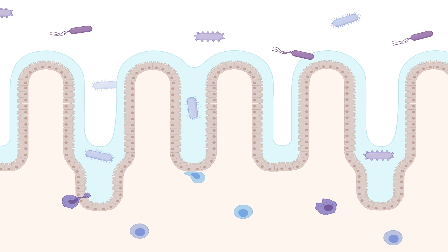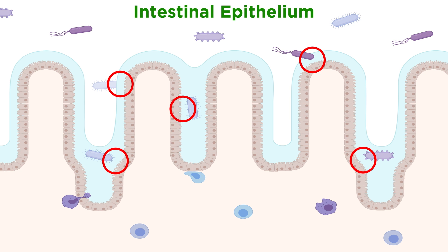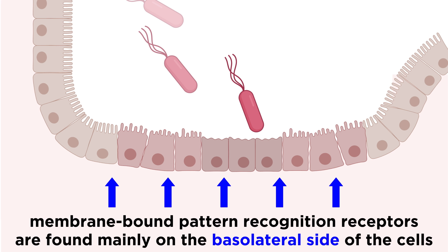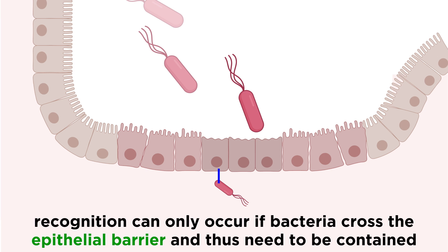The distribution of membrane-bound pattern recognition receptors can be extremely polarized. For example, intestinal epithelial cells are constantly exposed to the microbes in the intestinal microbiome. If they were constantly sensing the extracellular bacteria in the gut, the intestine would always be inflamed. Instead, many of these bacterial sensing pattern recognition receptors are only located on the basolateral side of the cell, which is the side not facing the inside of the gut. In this way, these cells will only sense bacteria that have crossed the epithelial barrier and that need to be contained by the immune system.